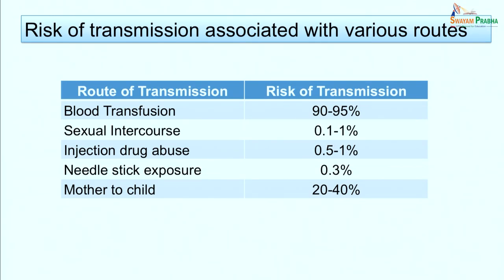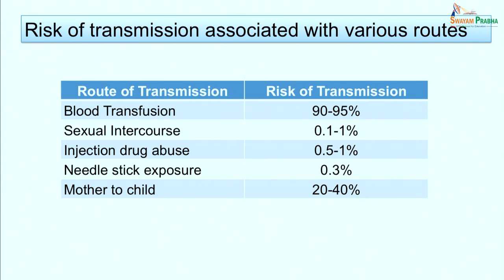Regarding risk of transmission by different routes: blood transmission carries a 90–95% risk but is the least frequent mode. During sexual intercourse, there is a 0.1–1% chance of transmission. In injection drug users, the risk is 0.5–1%. Needle-stick exposure carries a 0.3% risk. Mother-to-child transmission carries approximately 30% risk.